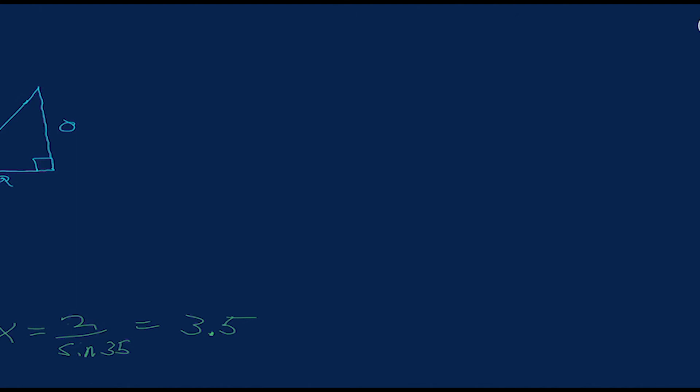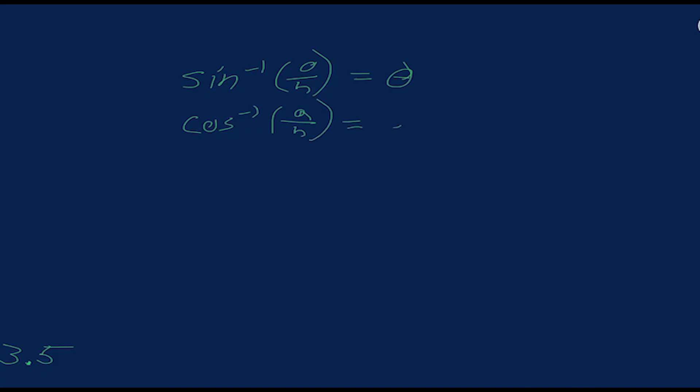Now, understanding just our trig functions isn't enough. We also need to understand our inverse trig functions. Now, these are very similar to the trig functions. The only difference is that instead of using them to find a ratio of sides from an angle, you use them to find an angle from a ratio of sides. So let me show you what that means. If we take sine inverse of opposite over hypotenuse, again, referring to our side lengths, then we will be left with theta. Similarly, cosine inverse of adjacent over hypotenuse also equals theta. And finally, tan inverse of opposite over adjacent equals that same angle theta. These are all different ways to find an angle.